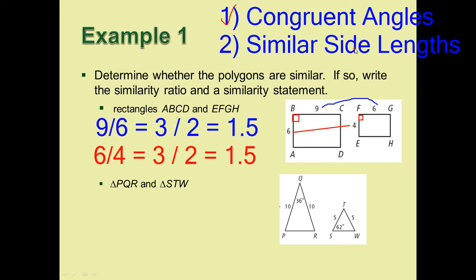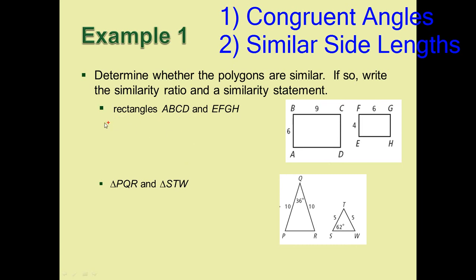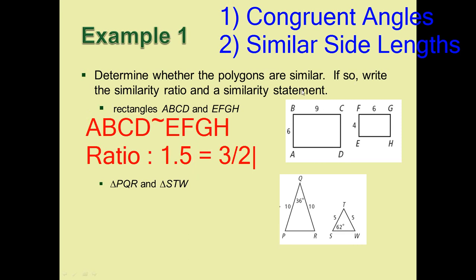Are all these similar sides, they're all the sides, similar lengths. Yes, both of them were increased by 1.5 in this direction. 6 times 1.5 is 9, 4 times 1.5 is 6. What we can do now here then is write our similarity statement, ABCD is similar to EFGH, and our similarity ratio, we already calculated the ratio, ratio was 1.5, which was the same thing as 3 over 2. For every 3 that this rectangle has, the other one has 2.